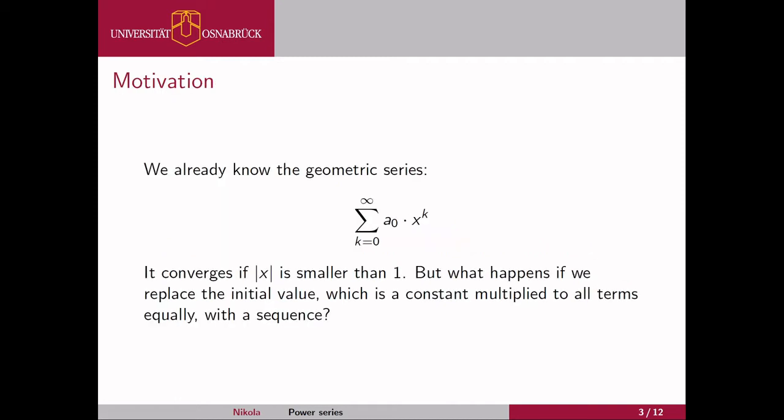Here I've written out for you the geometric series as we already know it. We have x to the power of k and then we sum up k from 0 to infinity. And we know if this is for example a half then it converges towards 2 and if it's 1 or greater than 1 it diverges. And the final value is multiplied by our constant a_0.